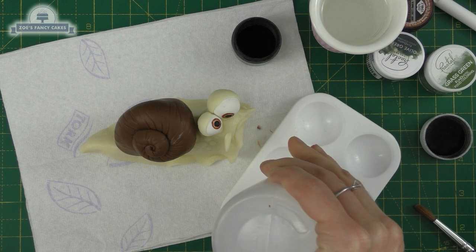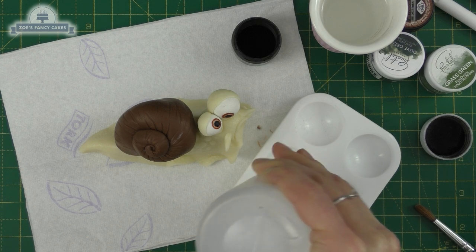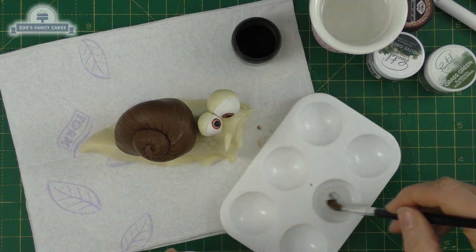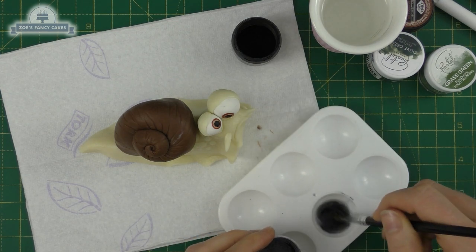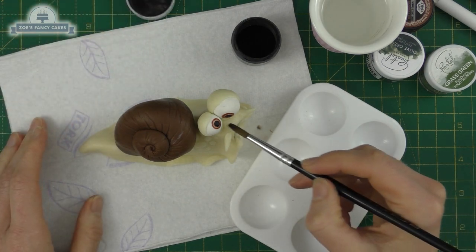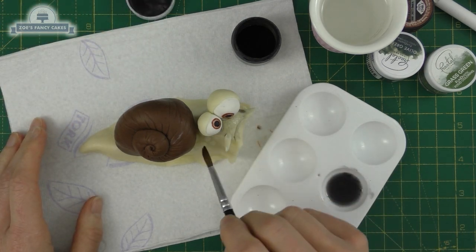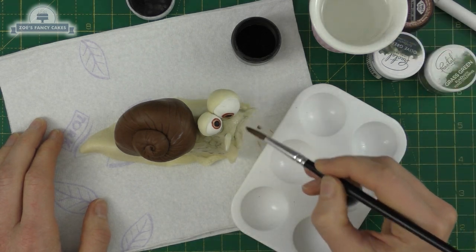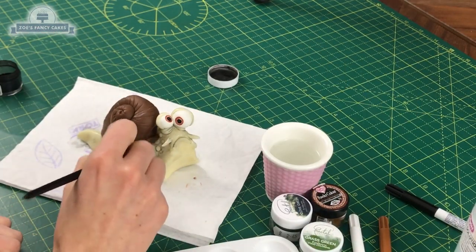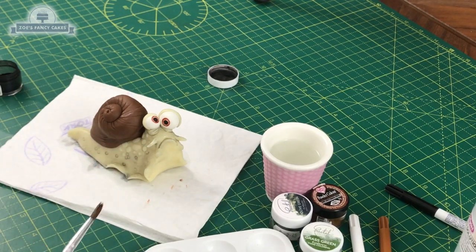Now we're going to put a bit of color on our snail's body. So I've got some dipping solution, or you can use like a clear alcohol or lemon essence to mix with my powdered color. So I'm starting with a black powdered color. I've diluted it quite a lot so it's quite transparent, and I'm just going to paint this over the whole body of my snail, just avoid the eyes, kind of runs in between the gaps in the texture.